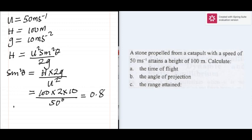Sine squared theta is 0.8. Then sine theta will be the square root of 0.8. The square root of 0.8 is 0.8944.